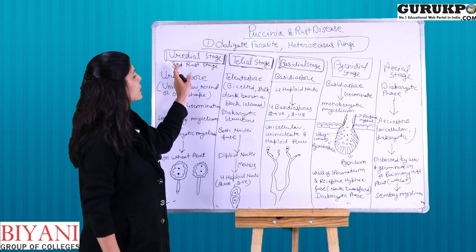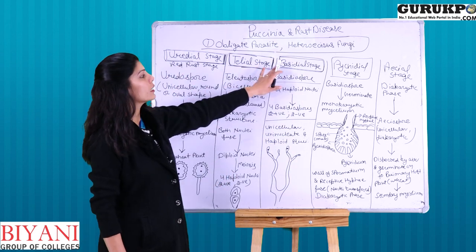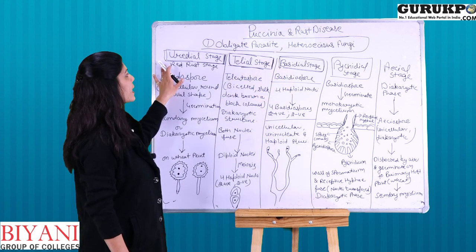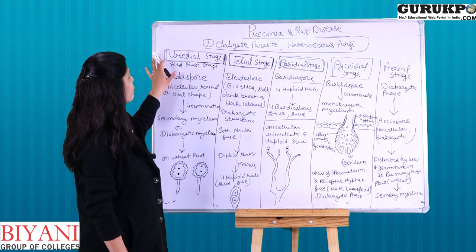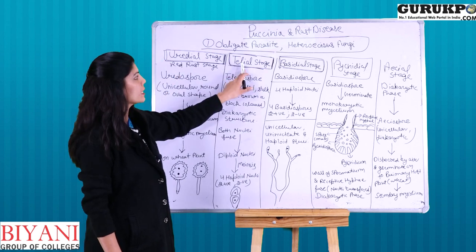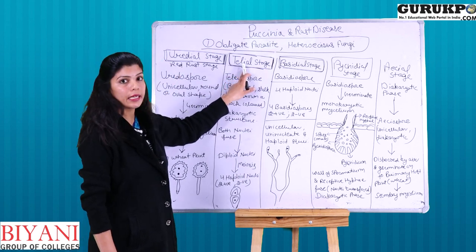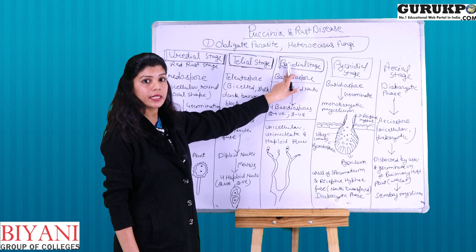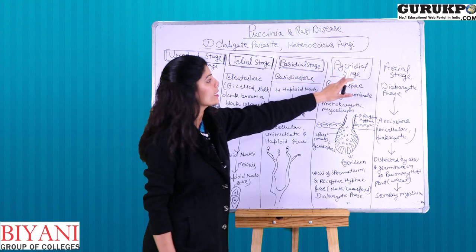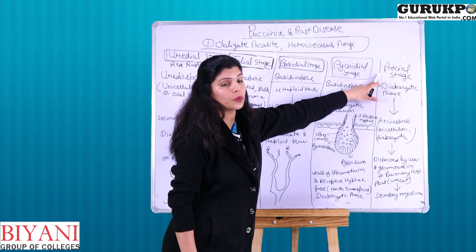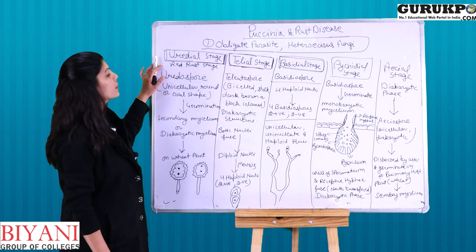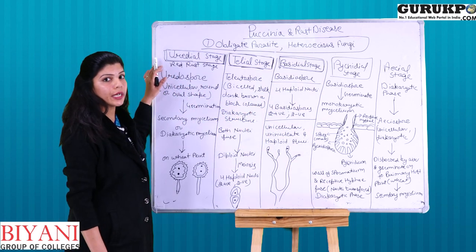If we talk about the Puccinia graminis life cycle, there are 5 stages. The first stage is the uredial stage, the second stage is the telial stage, the third stage is the basidial stage, the fourth stage is the pycnidial stage, and the last stage is the aecial stage.